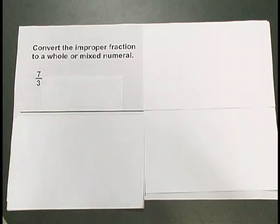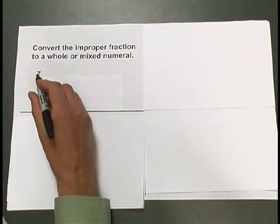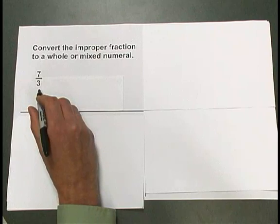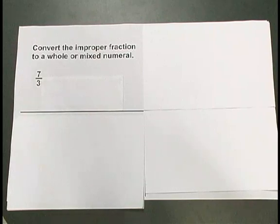This is an improper fraction because the number on top is larger than the number below. 7 is larger than 3. This improper fraction represents more than one whole.